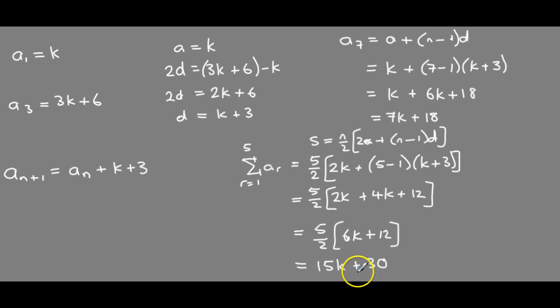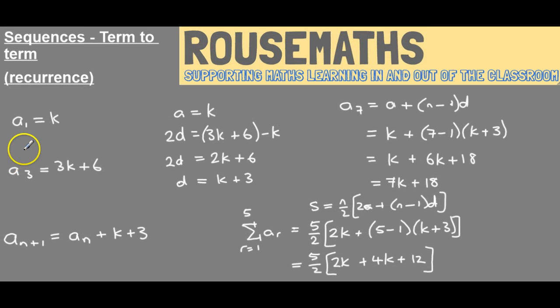A more abstract application of the two formulas and also involving a recurrence relationship. And just to remind you, the recurrence relationship is written here. So to get to the next term, you take the previous term and add on k plus 3. We've also been able to apply the normal arithmetic sequence where we've got a first term, a difference, and we can apply the two formulas just as we have done in previous questions.